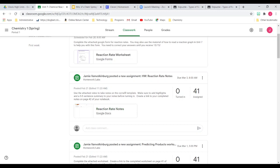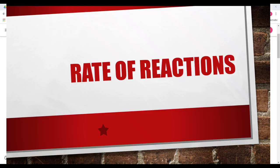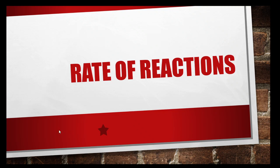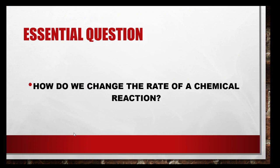Alright, so let's go ahead and get started. Rate of Reaction — we're going to talk about a couple different things that can cause the reaction to go faster. So the essential question for our notes here is: how do we change the rate of a chemical reaction? If we need it to go faster, what can we do? You might have seen that with the water reaction — the decomposition of hydrogen peroxide.